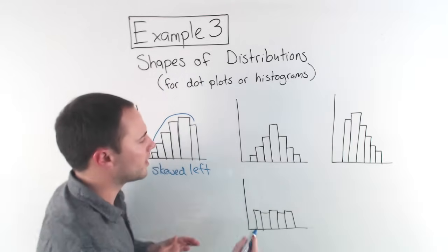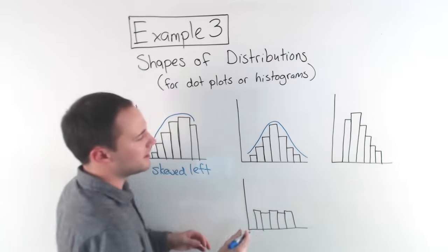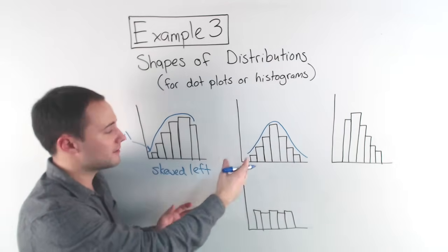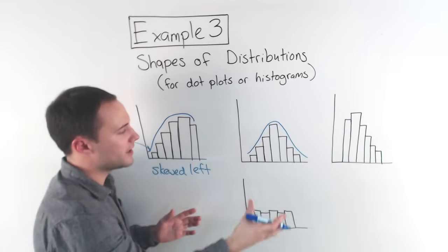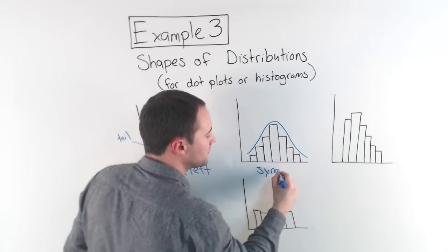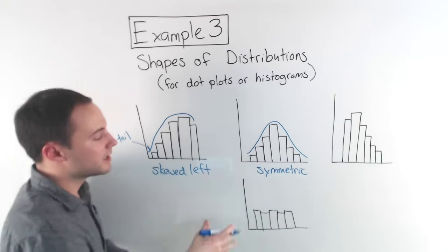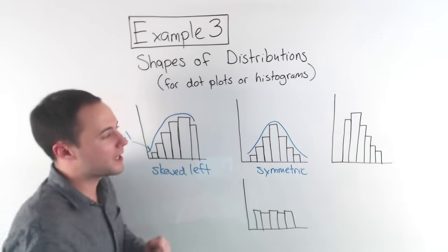The next one. Well, here, you notice it's pretty even, right? Left side and the right side, very similar. We call this, this is symmetric. Okay, it's got symmetry. So the name of that distribution is symmetric, okay?